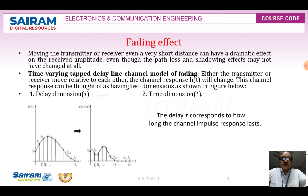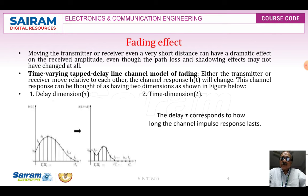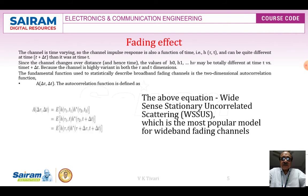The other is the time dimension. The delay dimension τ corresponds to how long the channel impulse response lasts. The channel is time-varying, so the channel impulse response is also a function of time. τ is the delay dimension and t is the time dimension, and the response can be quite different at time t plus delta t — a small fraction of time added.